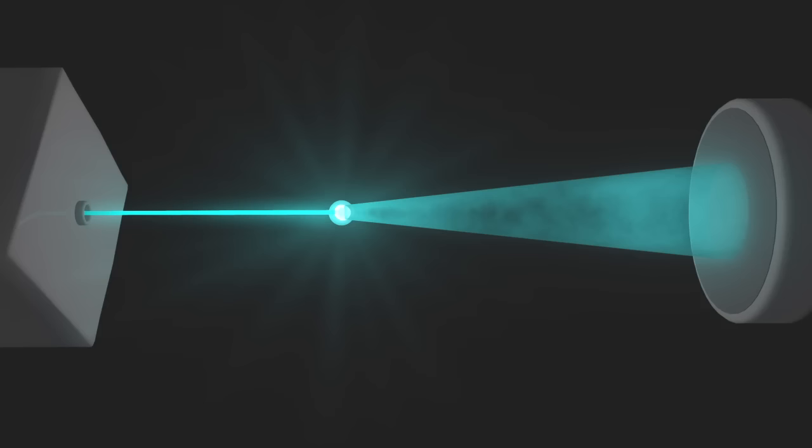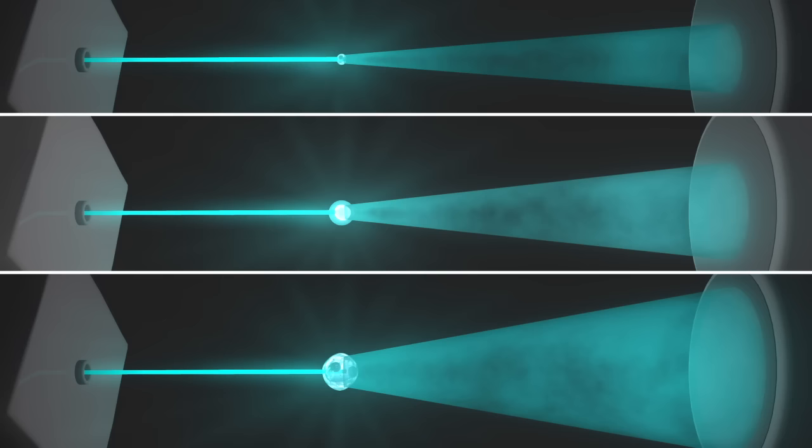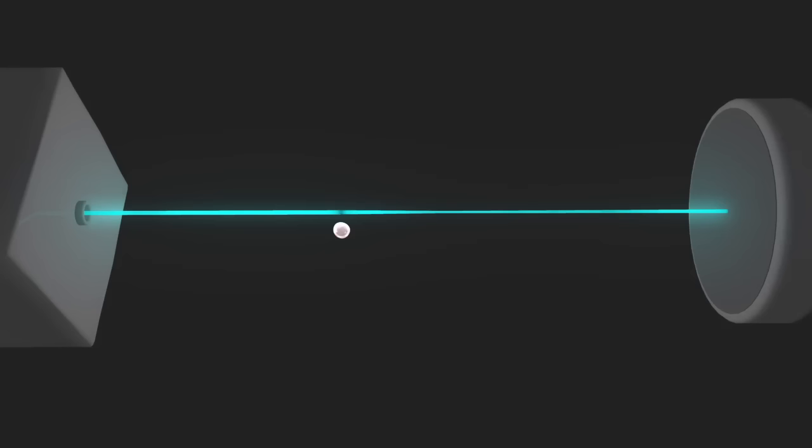The flow cytometer detects light scattered in a forward manner, called forward scatter, and light scattered in a sideways manner, called side scatter. The amount of forward scattered light for each cell is detected by a detector on the far side of the cell from the laser. Forward scatter is proportional to the size of the cell.